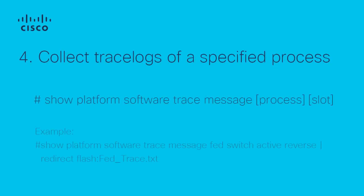After rotating all the current trace logs, if you want to collect the trace logs of a specified process, we can skip the process of downloading and decoding a trace by reading the information directly. Depending on the scenario, we can trigger an event and immediately redirect the information to a text file. Use the command: show platform software trace message. This example shows how to display the trace messages for the file process and save the logs to flash.